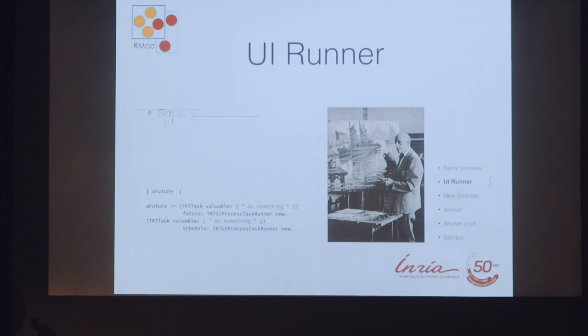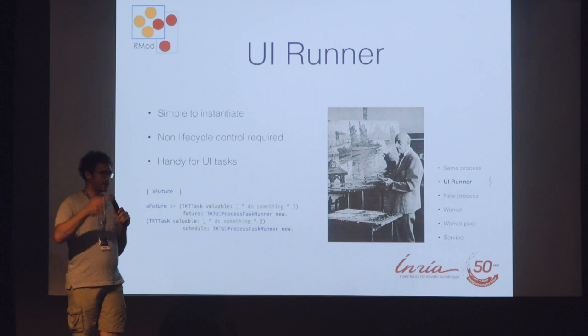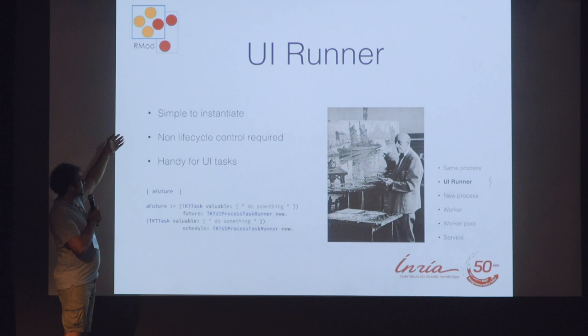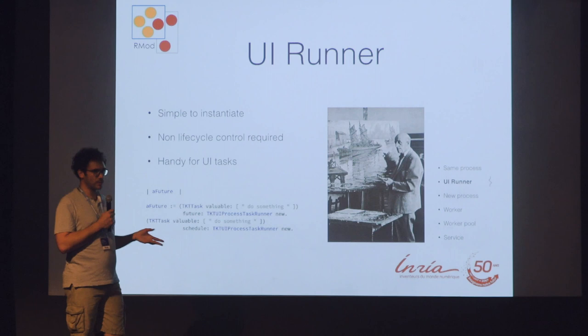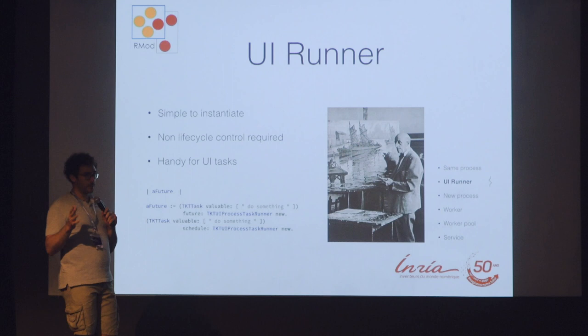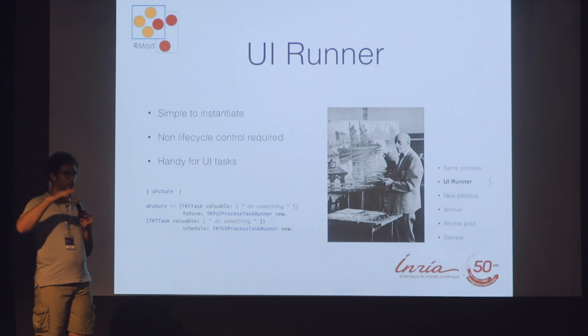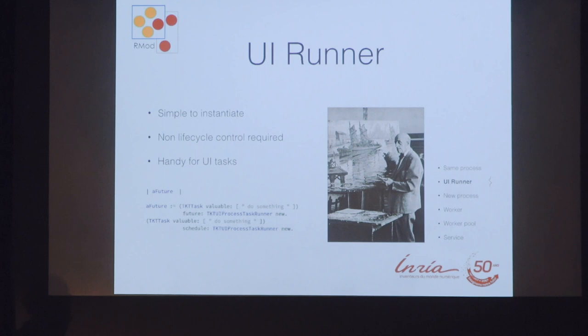After we have the UI runner. The UI runner delegates into the world morph cycle, so there's no thread either. It's pretty simple to instantiate, no life cycle control required, and it's handy for UI tasks. There are some things you cannot do in a second thread that is not the morphic UI thread in Pharo — for example, popping up a dialogue: UIManager default request whatever from the user normally doesn't work unless it's in the morphic UI thread. So you may want this kind of task to run specifically in that thread.